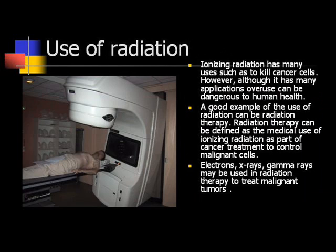Use of radiation. Ionizing radiation has many uses, such as to kill cancer cells. However, although it has many applications, overuse can be dangerous to human health. A good example of the use of radiation is radiation therapy, which can be defined as a medical use of ionizing radiation as part of cancer treatment to control malignant cells. Electrons, x-rays, and gamma rays may be used in radiation therapy to treat malignant tumors.